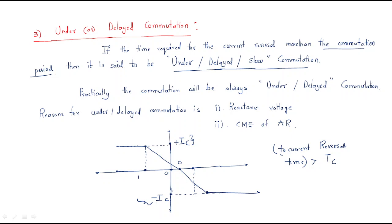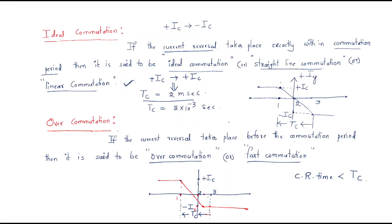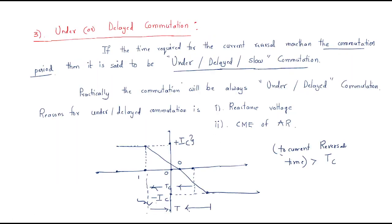It will take more time — that is delayed or slow commutation. So to summarize: ideal commutation means both times are the same; over commutation means it completes early; under or delayed commutation means it takes more time. Practically, commutation will always be under or delayed commutation, so this is very important.